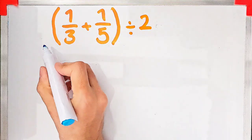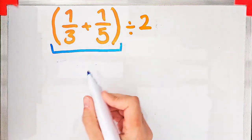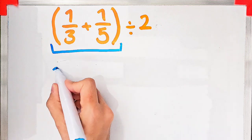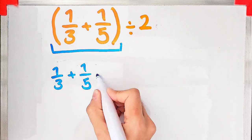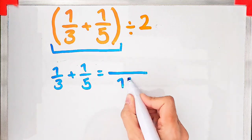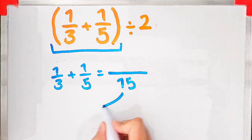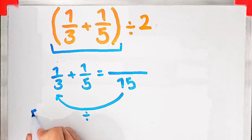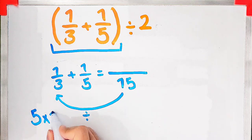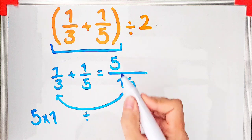We find the least common denominator of these fractions and solve it step by step. We have a new fraction where the denominator is 15. 15 divided by three equals five, and five times one equals five.